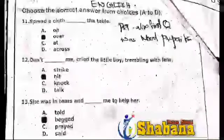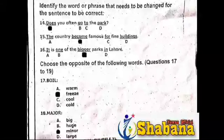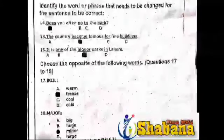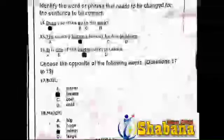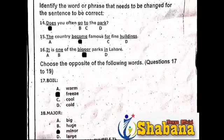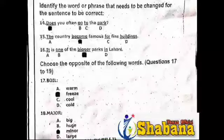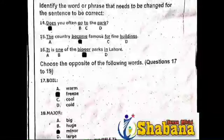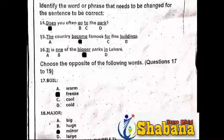Now we come to Part B, about identifying the word or phrase that needs to be changed for the sentence to be correct. First: 'Does you often go to the park?' — the correct answer is 'does' (should be 'do'). Then: 'The country becomes famous for the fine building' — the correct option is 'become'. Third: 'It is one of the bigger parks in Lahore' — the answer is 'bigger' (option C).